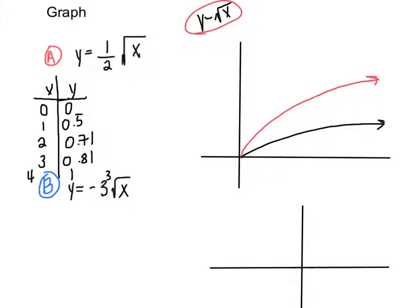So we know that when we multiply our parent graph by a number less than 1, so our a is less than 1, our graph is shrunk vertically.